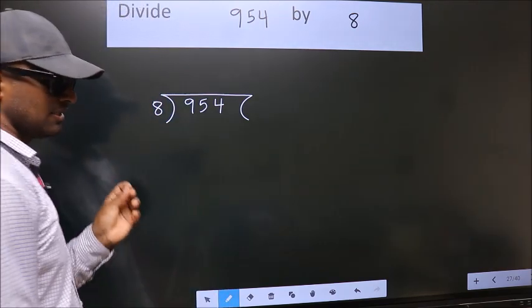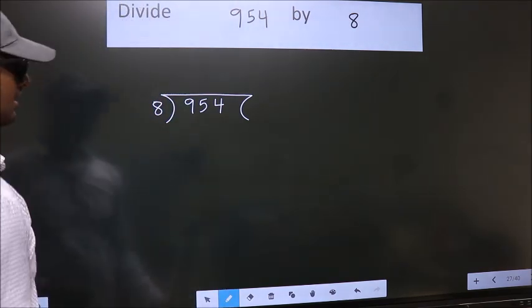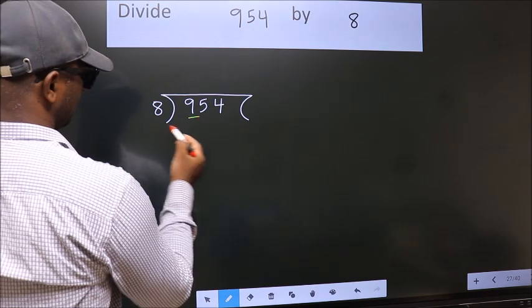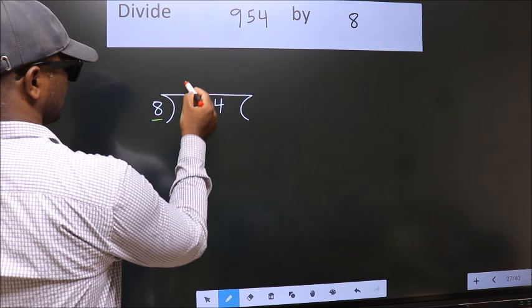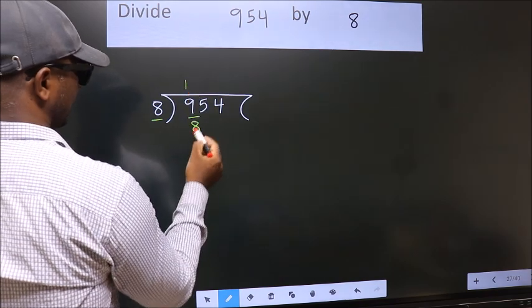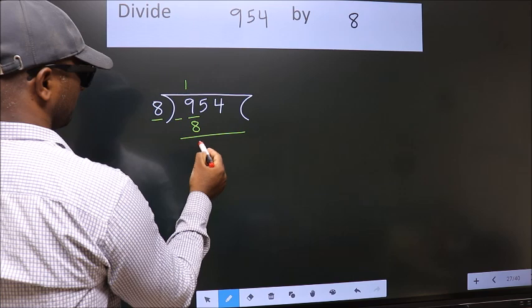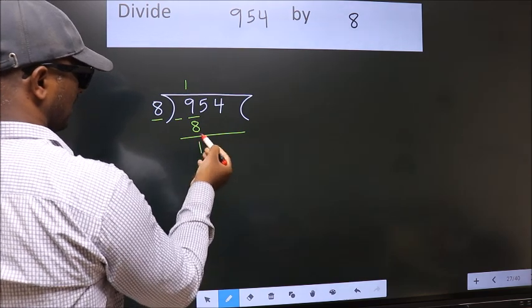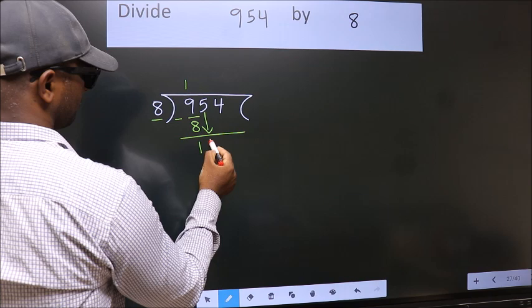This is your step 1. Next, here we have 9, here 8. A number close to 9 in 8 table is 8 once 8. Now we should subtract, we get 1. After this, bring down the beside number, so 5 down.